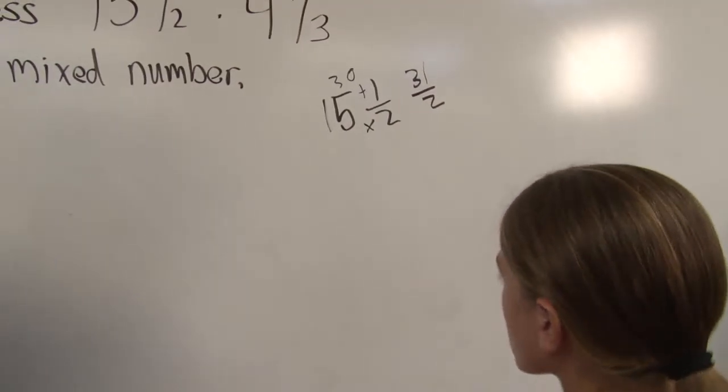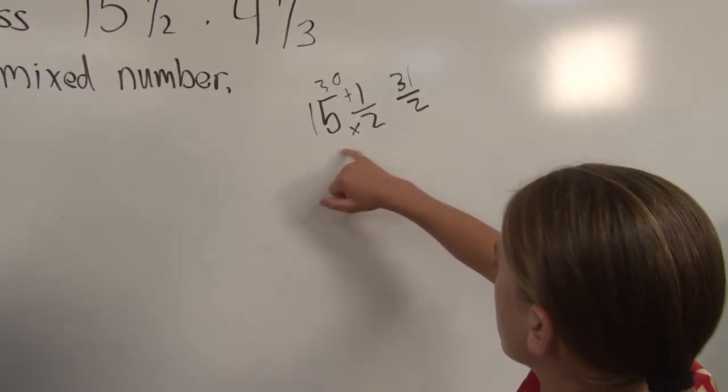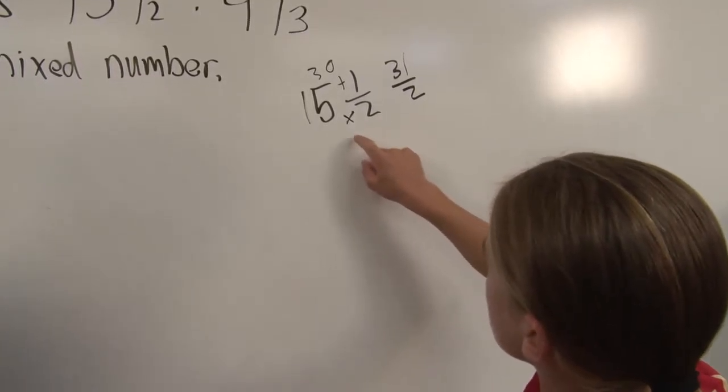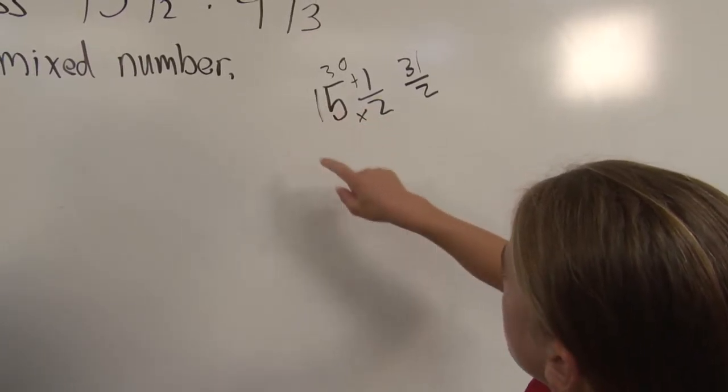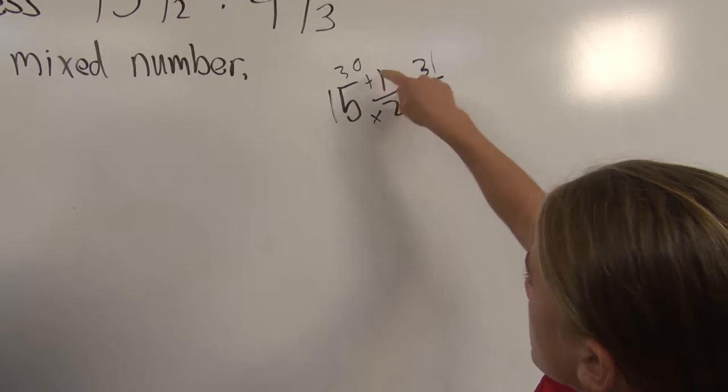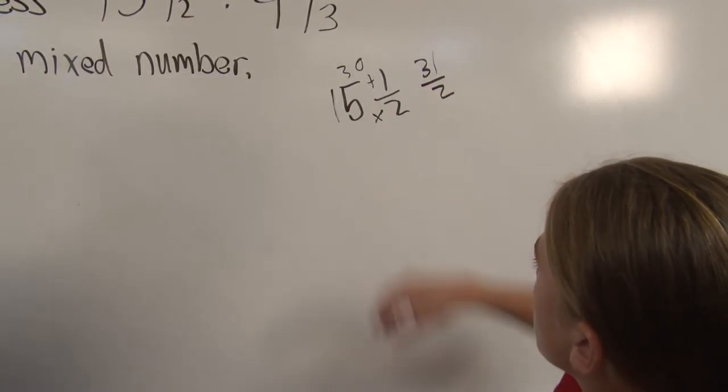Yes. First, you multiply the whole number by the denominator, so 15 times 2 would be 30, and then you add the number you get to the numerator. You add it, and that would be 31 over 2.